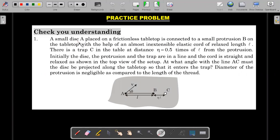A small disk A placed on a frictionless tabletop is connected to a small protrusion B on the tabletop with the help of an almost inextensible elastic cord of length L. There is a trap C in the table at a distance of L by 2 from the protrusion. Initially, the disk, the protrusion and the trap are in line ABC and the cord is straight and relaxed as shown in the top view of the setup. At what angle with the line AC must the disk be projected along the tabletop so that it enters the trap, diameter of the protrusion is negligible as compared to the length of the thread.